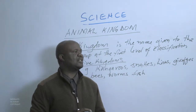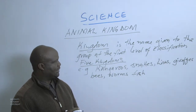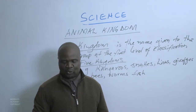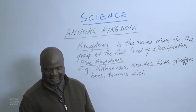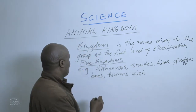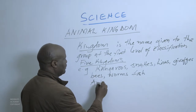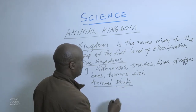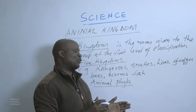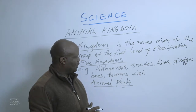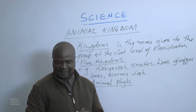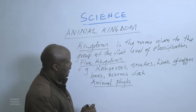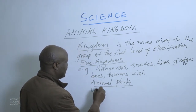We also have animals that stay in water, for instance fish, which are also found within the animal kingdom. The organisms in the animal kingdom are divided into smaller groups according to their characteristics. We call these groupings animal phyla — phylum in singular, phyla in plural.